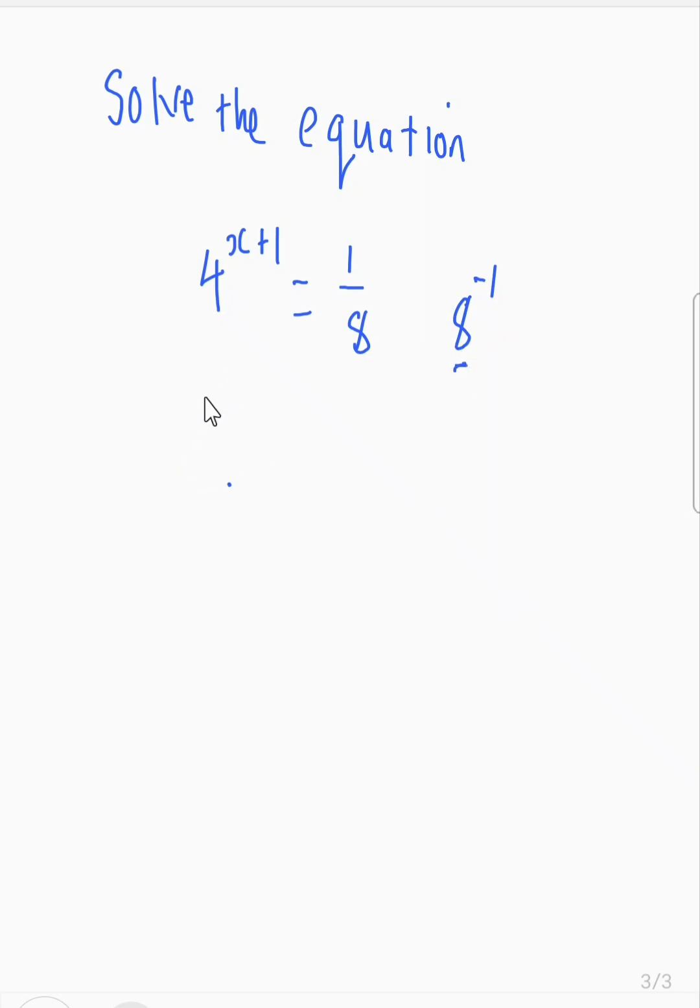So we copy the first part. The first part is 4 to the power x plus 1, which equals, and now we have 8 to the power negative 1. Okay good. Now, in order for us to solve this equation, we need to make these two sides of the equation have the same bases.